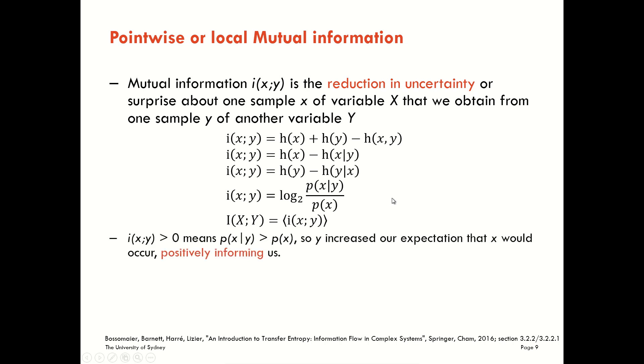We get a positive value for the pointwise mutual information when our posterior probability of X that did occur given the knowledge of Y was larger than the prior probability of X. So what happened here is that knowing the value of Y increased our expectation that this realization of X would occur. It increased the likelihood against the prior probability that positively informed us about the realization of X that happened.